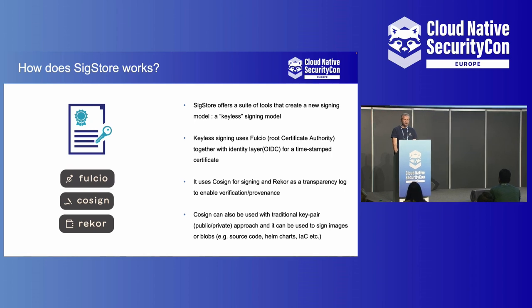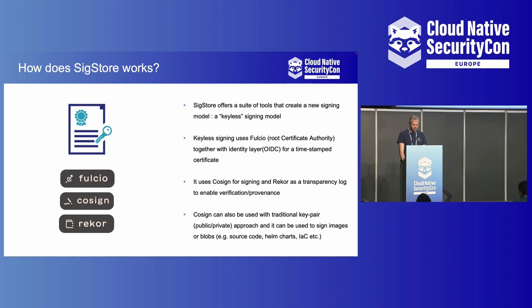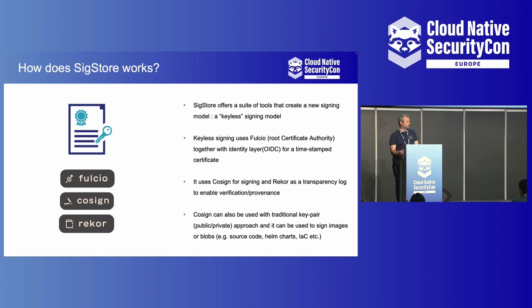How does SigStore work? Just a nutshell as a small background. SigStore is a collection of tools that created a very nice keyless signing model. It also has the classical signing with private and public key. If you're using the keyless signing, you can use Fulcio, which gives you a root certificate authority. Together with OpenID Connect, you can get a timestamp certificate. Then Cosign can use this for signing, creating a signature record and a transparency log, which will be constantly queried and monitored to get verification and provenance.